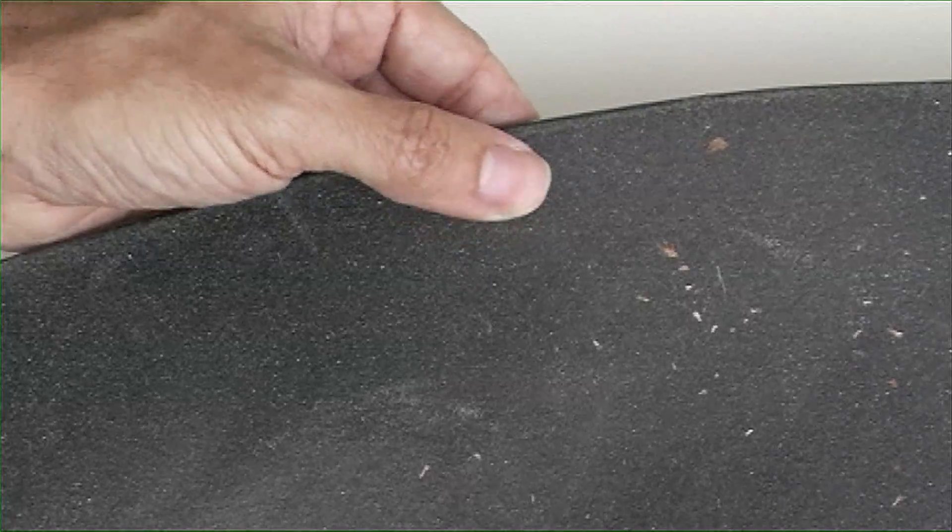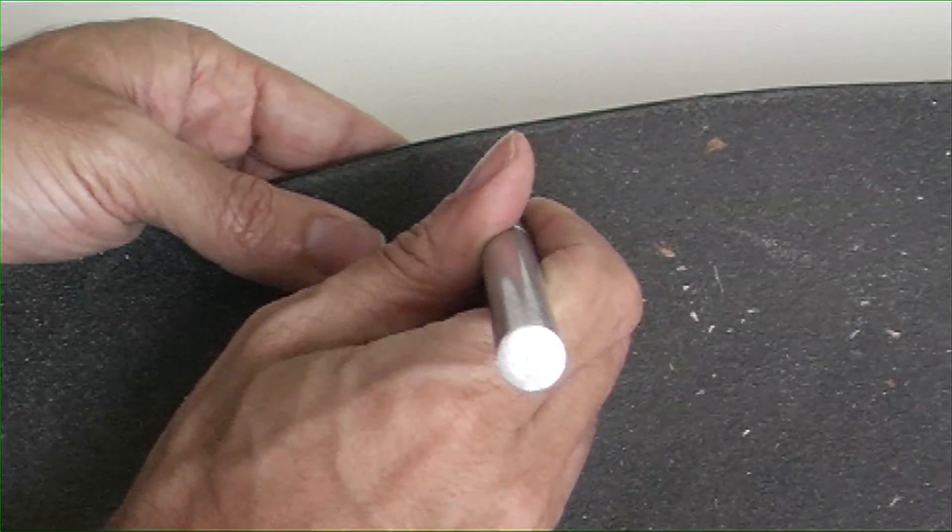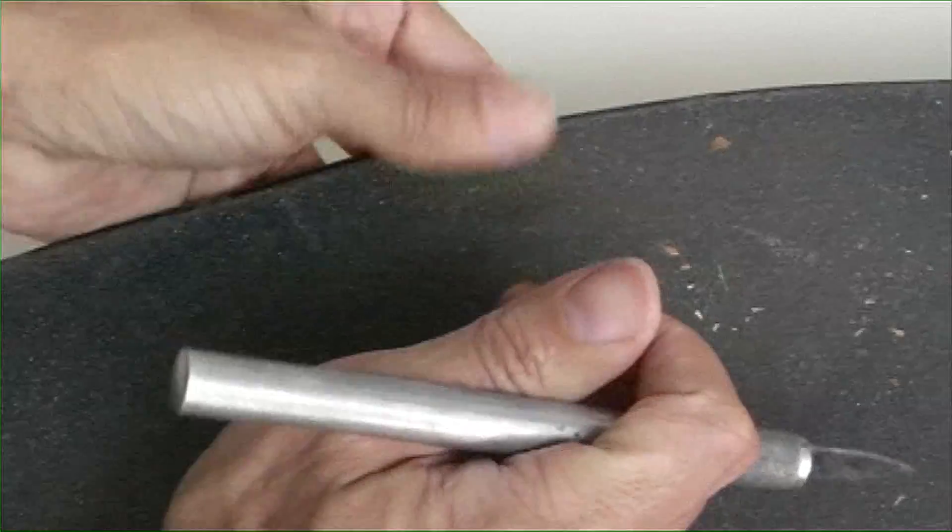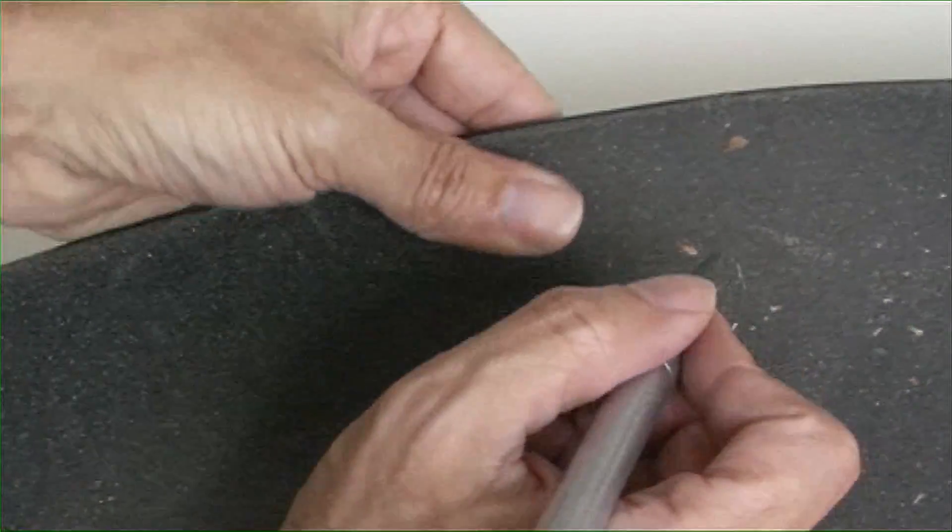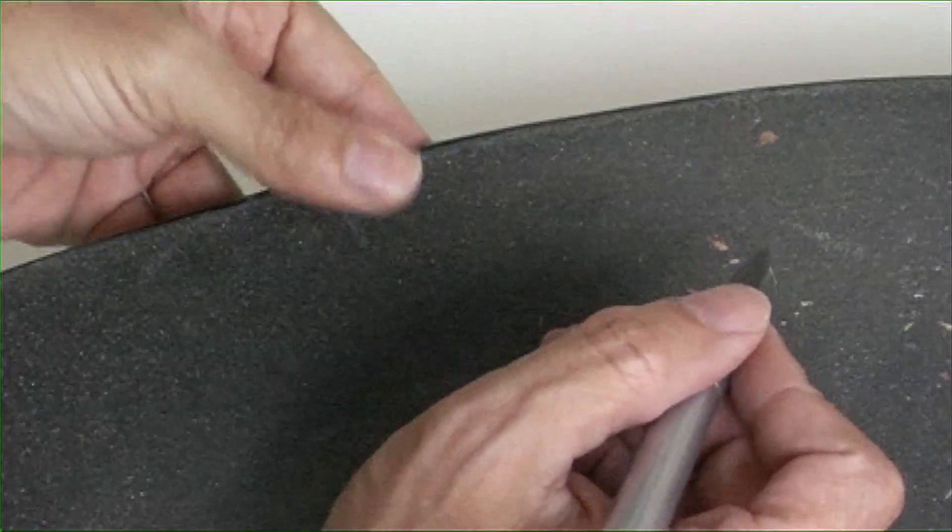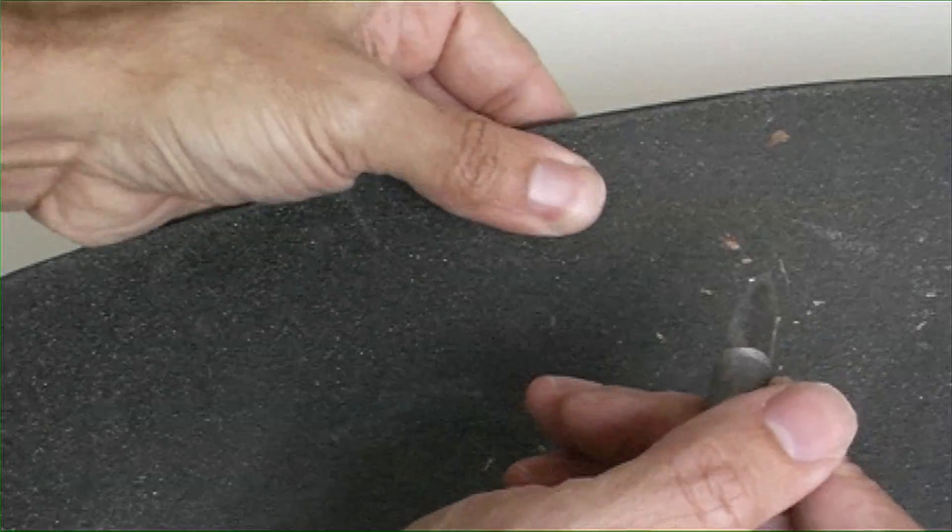One last little trick is if you do have air bubbles is take an X-Acto knife or your razor blade and kind of pierce the grip tape like we've done here and then press down with your thumb and get rid of that extra air bubble area and then your grip tape is nice and smooth on your skateboard.